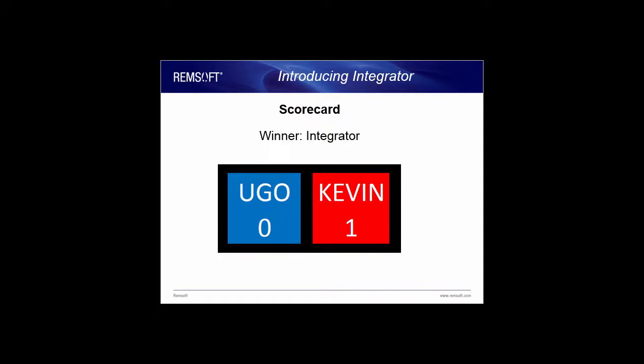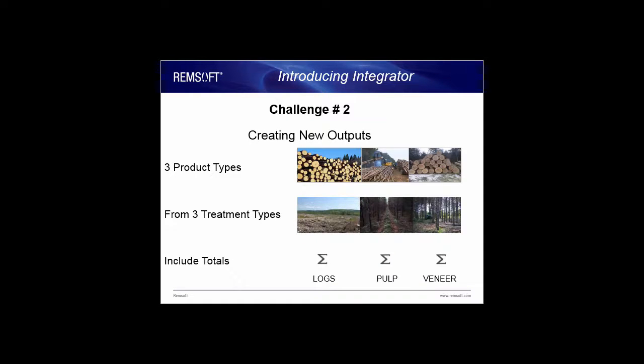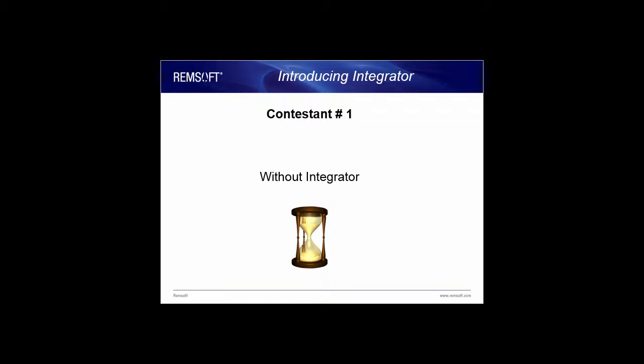Since this demo model was built purposefully simple, it's lacking meaningful outputs for reporting. We'd like to know the volume of logs, pulp and veneer scheduled to be harvested from each of the three actions, clear cut, light thinning and heavy thinning, as well as the total volumes for each product. Simple enough, right?